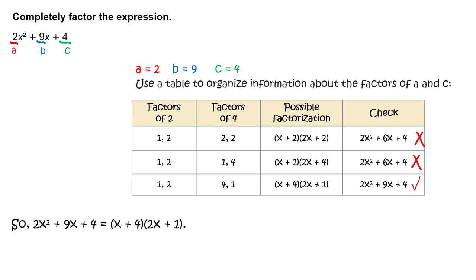So, 2x squared plus 9x plus 4 equals (x + 4)(2x + 1).